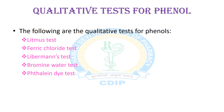The qualitative tests for phenols include a number of tests, among them the litmus test, ferric chloride test, Liebermann test, bromine water test, and thaline dye test are the main ones.